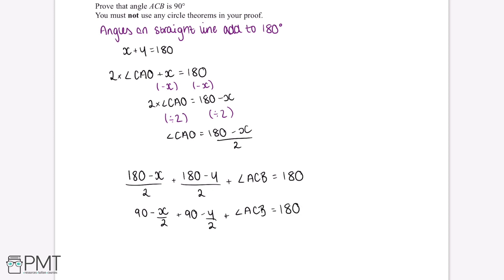If we collect all the like terms, this gives us that 180 minus X over 2 minus Y over 2 plus angle ACB is equal to 180 degrees.